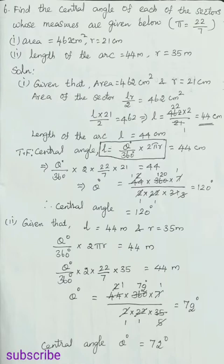For the first problem, area and radius values are given. We will find the length of the arc first, then use that to find theta. Area of the sector equals l times r divided by 2, which equals 462 centimeters. Substituting r = 21: l times 21 divided by 2 equals 462, which gives l equals 462 times 2 divided by 21. Solving, l equals 44 centimeters.